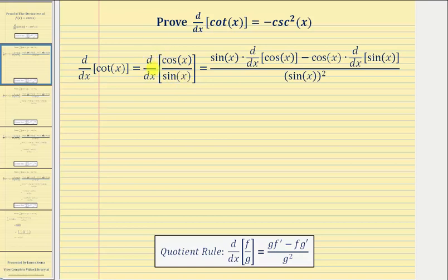And then we'll find the derivative of cosine x divided by sine x with respect to x using the quotient rule, which is stated here below for reference. So the derivative of cosine x divided by sine x with respect to x is equal to: